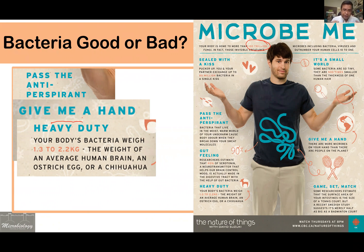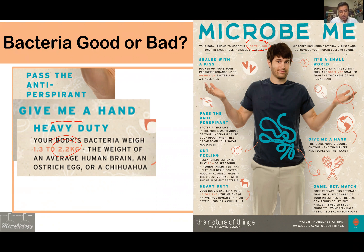If you combine all the microorganisms present in our body, their total weight is almost 2 kg — equivalent to an average human brain, an ostrich egg, or a small dog. We carry a large number of microorganisms in us and on us, and these organisms carry out useful processes, for example, helping us digest our food. A major participant in digestion is the microorganisms present in our gut.